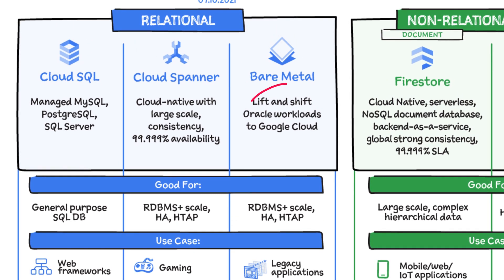Bare Metal Solution provides hardware to run your specialized workloads with low latency on Google Cloud. This is specifically useful if there is an Oracle database that you want to just lift and shift into Google Cloud. And this enables data center retirement and really paves the way to modernize those legacy applications.